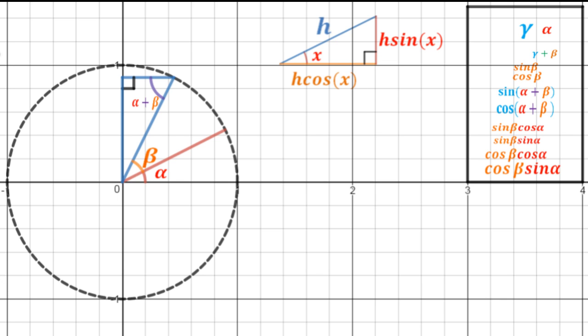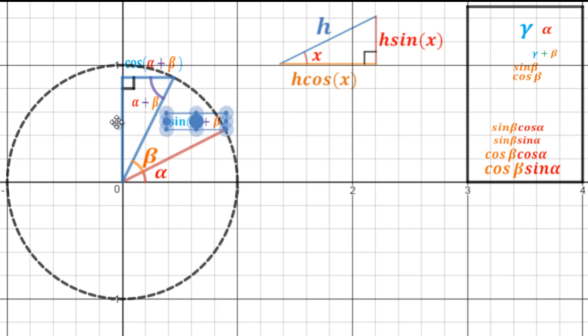So we are going to label the sides of this blue triangle. So here the hypotenuse is of length 1 since we are on the unit circle. So the adjacent side is just going to be the cosine of alpha plus beta and the opposite side is going to be the sine of alpha plus beta.